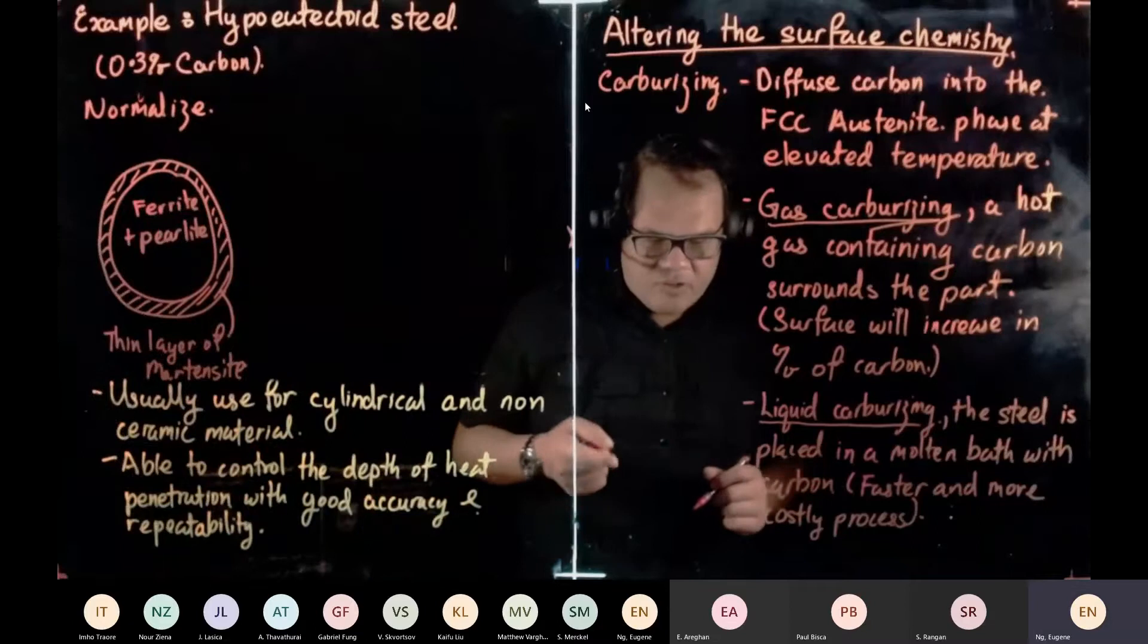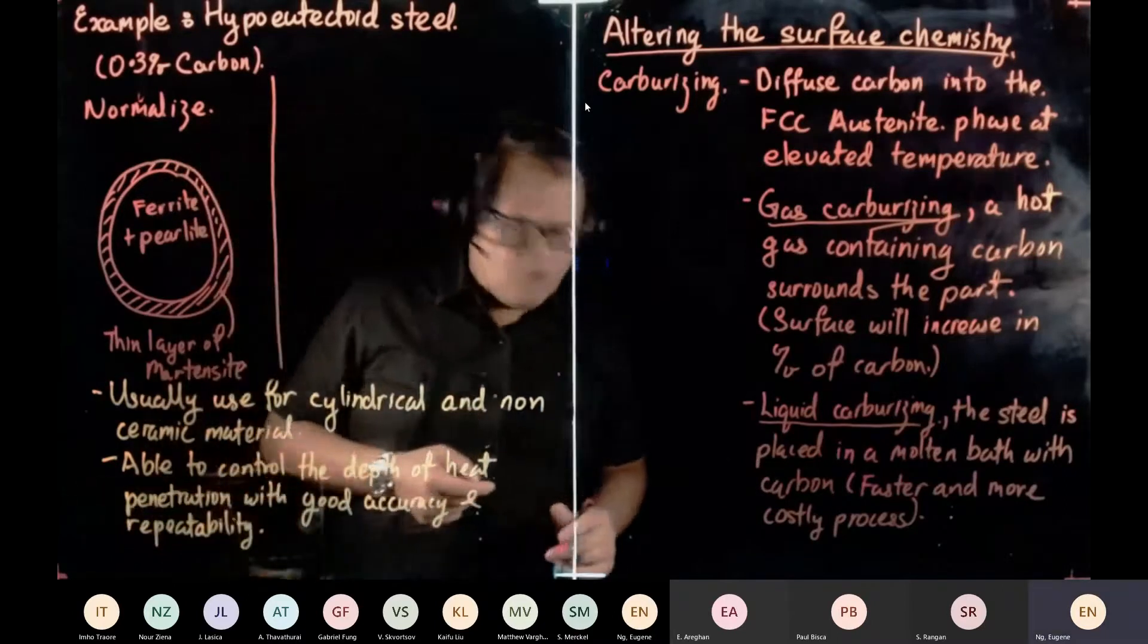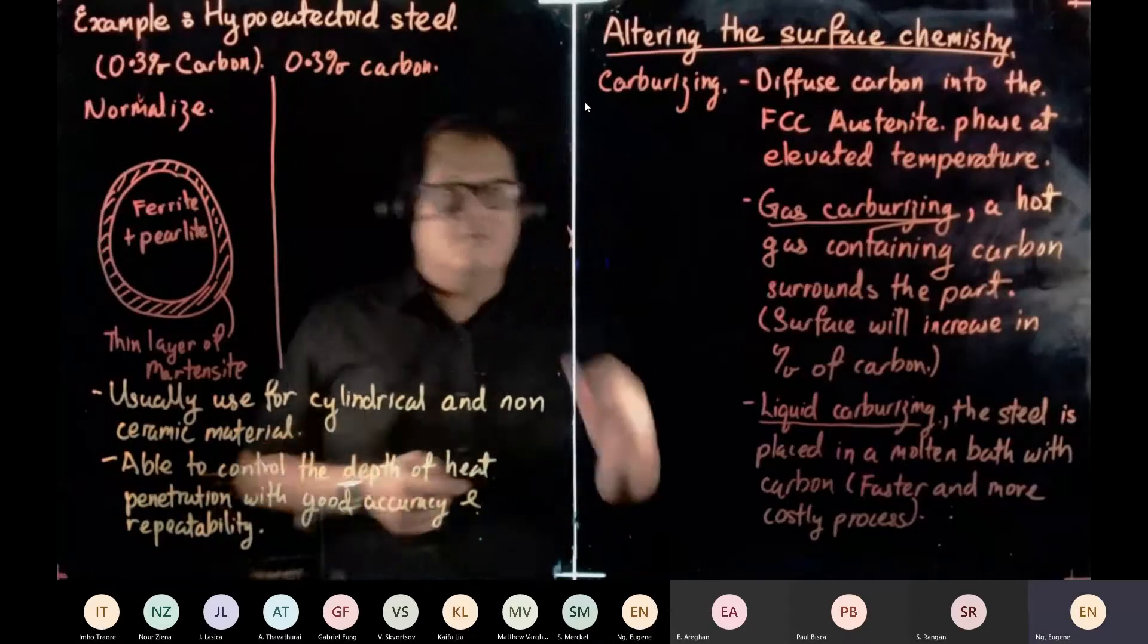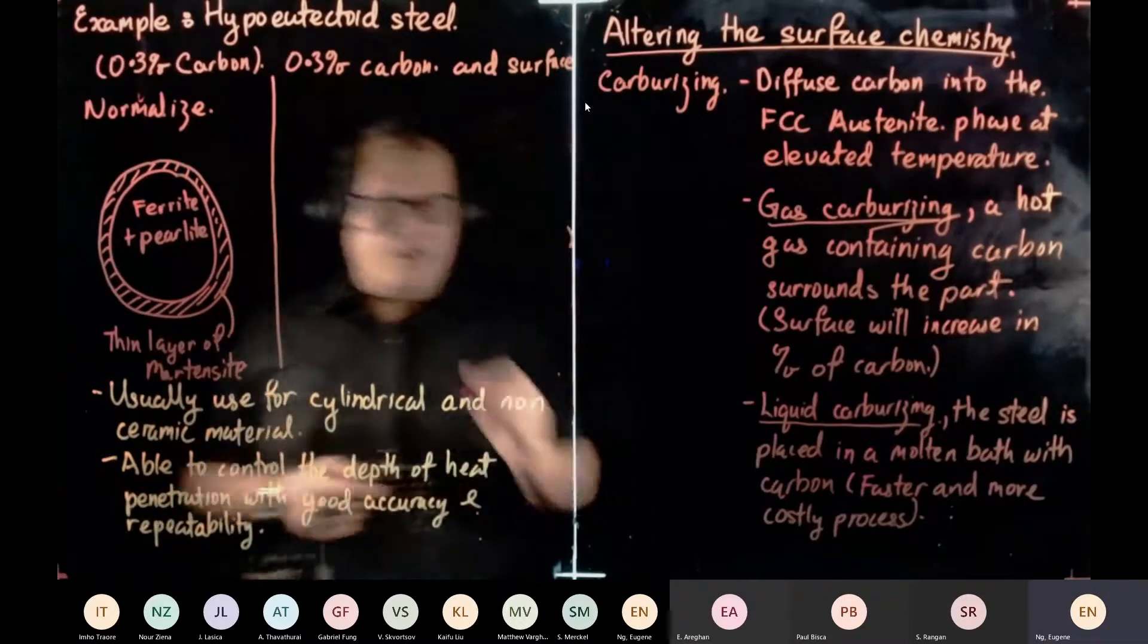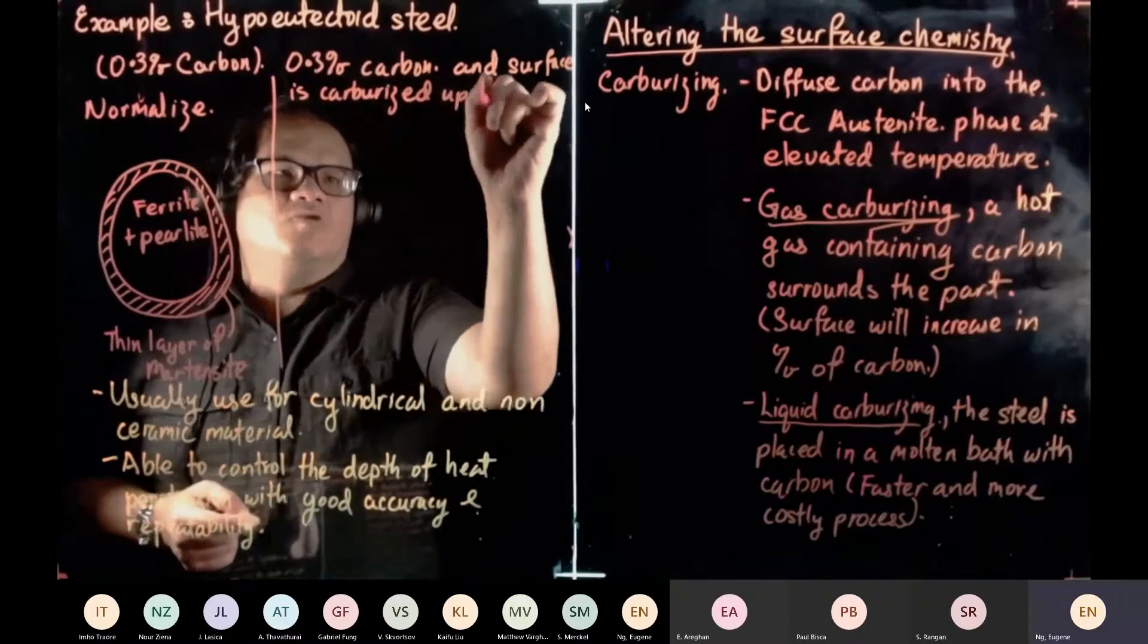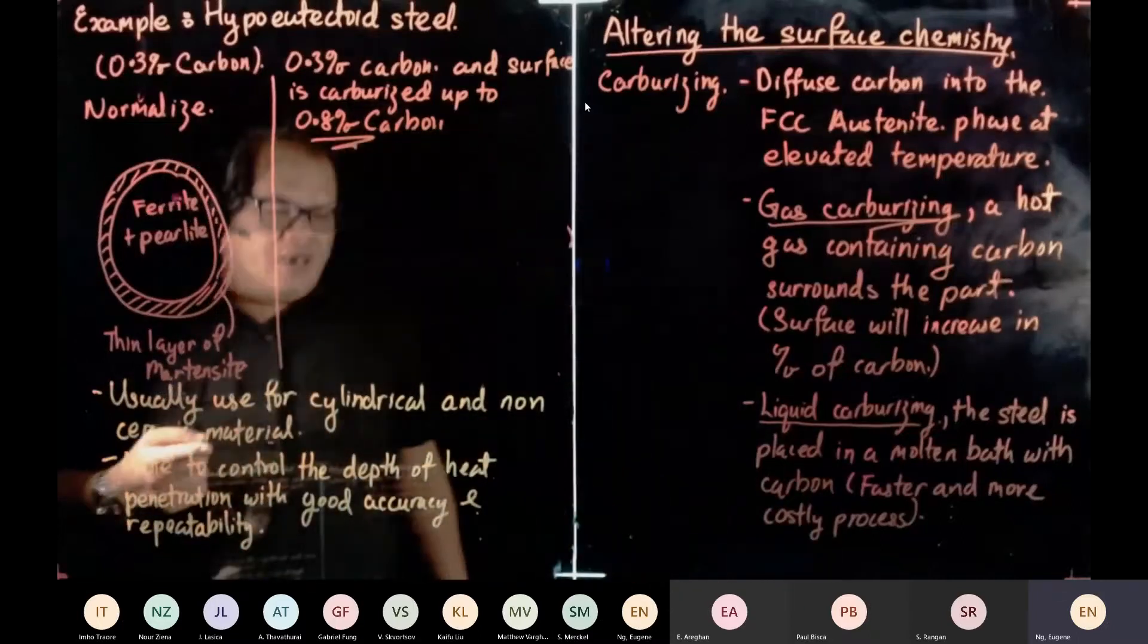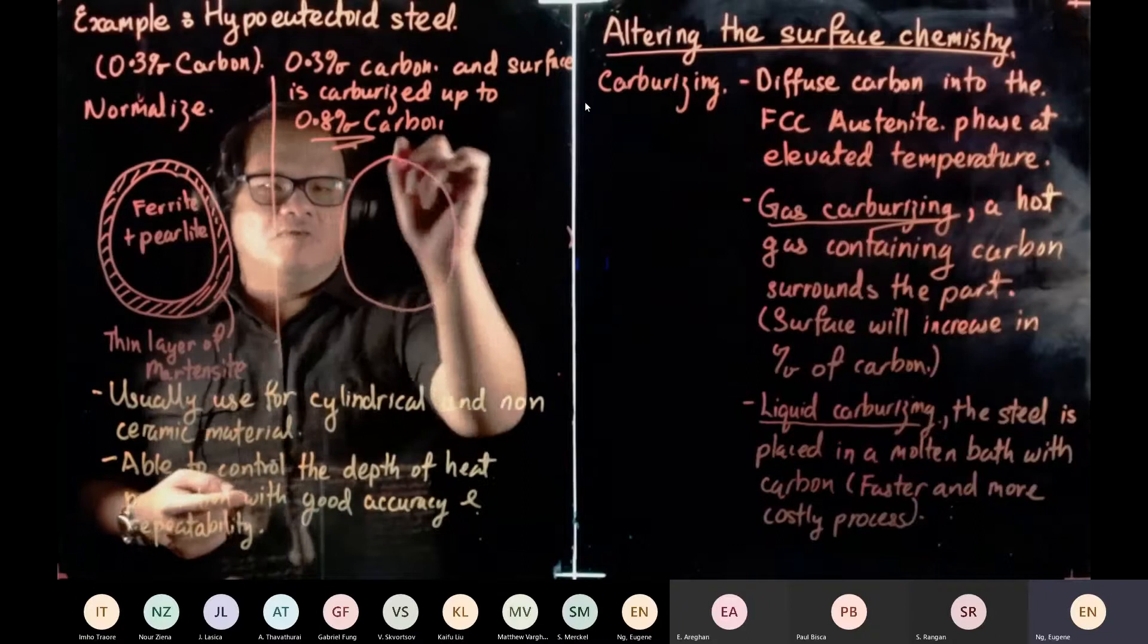However, if we do surface carbonizing, so the next one we're going to compare. So we still have 0.3% carbon, still the same. And the surface, so now we change the surface, it's carburized up to 0.8% carbon. And I'll explain why 0.8% is a good temperature.